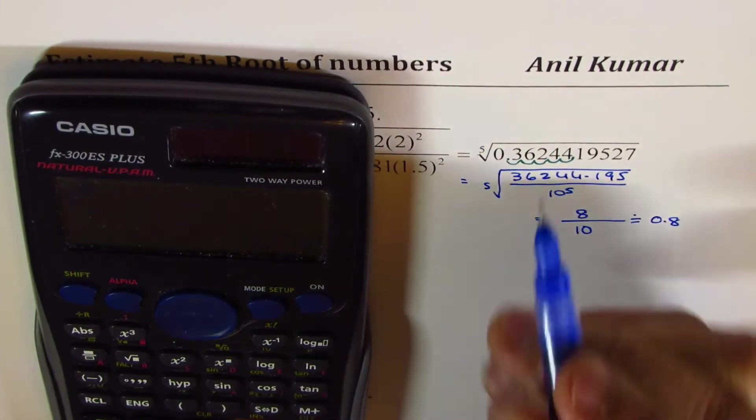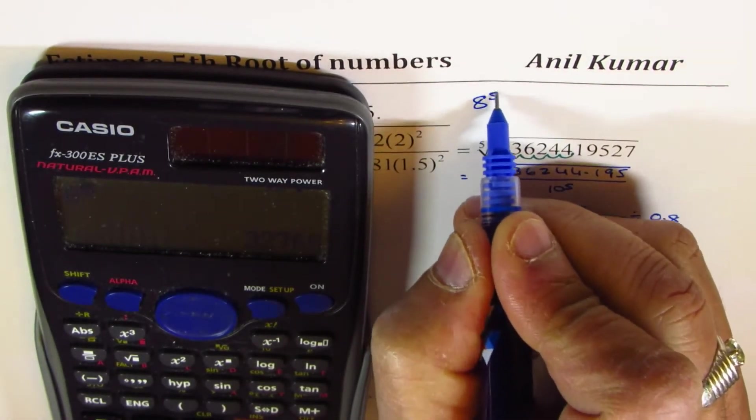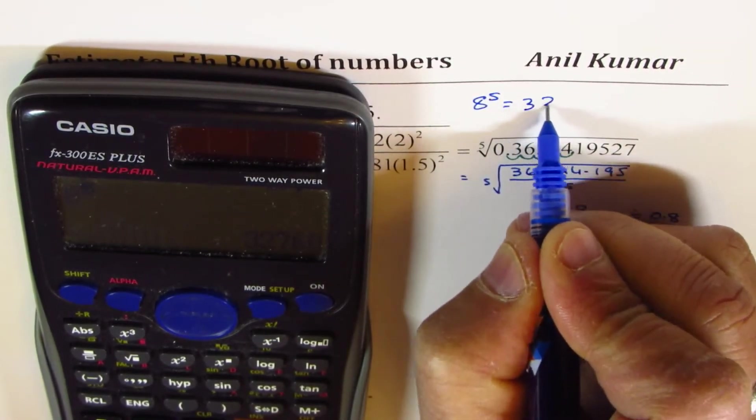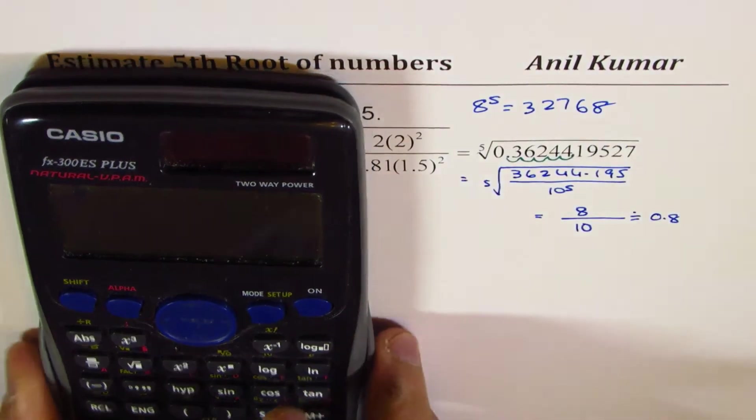8 to the power of 5 is equal to 32768, right?